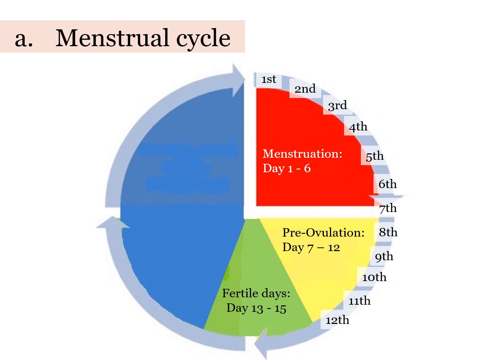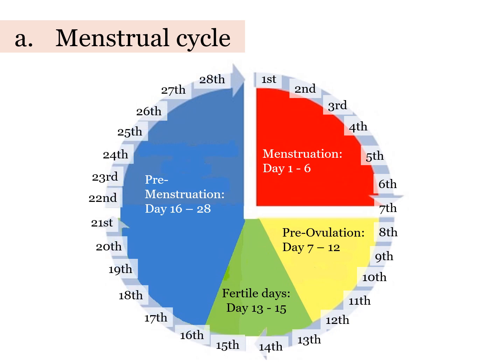Ovulation happens within the fertile days, which is between day 13–15. Within this fertile window, eggs may be released from the ovary and fertilization will take place if there is sperm at the right time and place. The last phase will follow from day 16 until day 28, which is the pre-menstruation phase. This phase lasts until the woman has her next period. In this chart, we are using an example of a 28-day cycle.